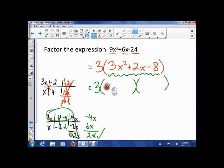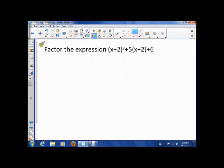So one factor is 3x minus 4, another factor is x plus 2, and we're done. So now notice that there's no common factors in there, no common factors in there, so we're good. Everything's factored as much as possible.